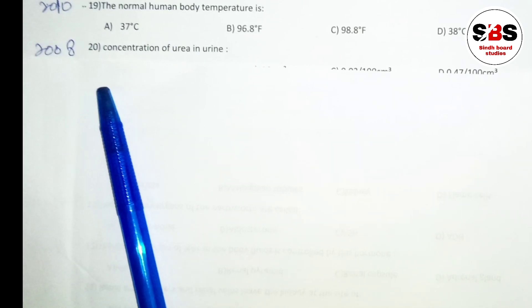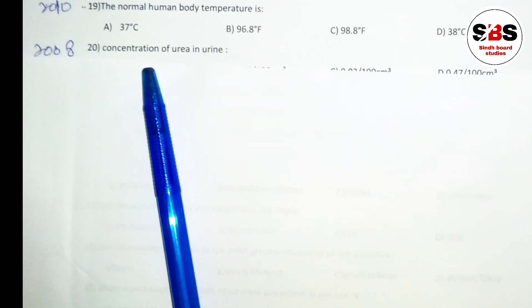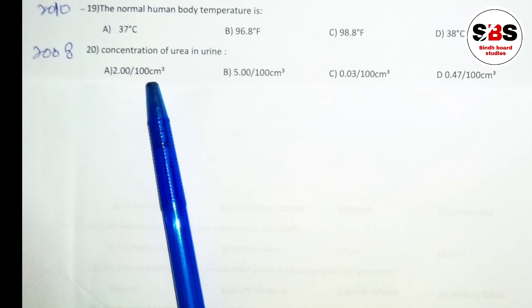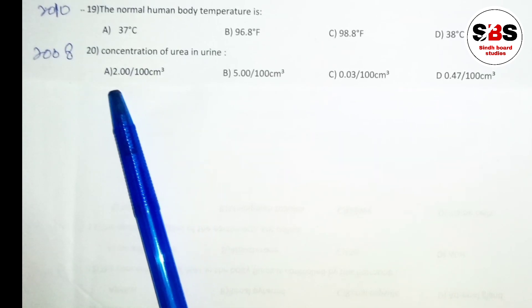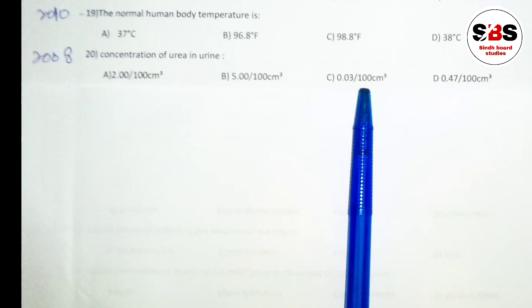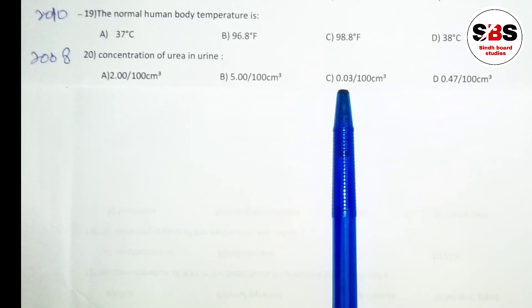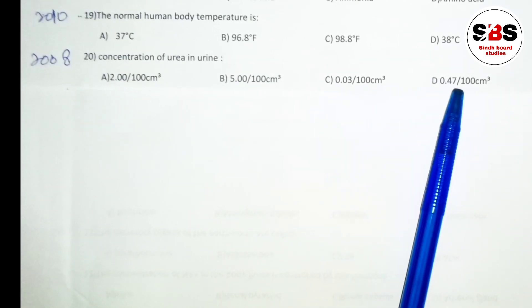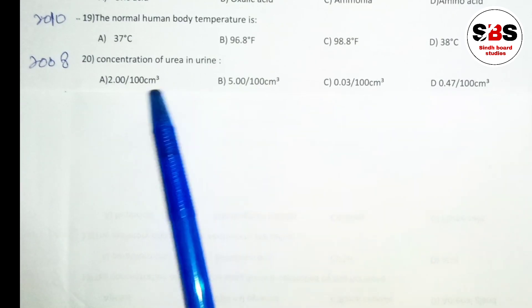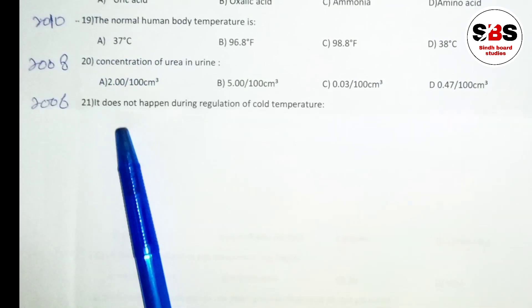Question number 20 (asked in 2008): the concentration of urea in urine is what? Options are 2g per 100cm³, 5g per 100cm³, 0.03g per 100cm³, or 0.47g per 100cm³. The correct answer is 2 grams per 100cm³.